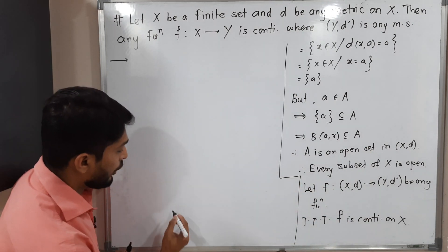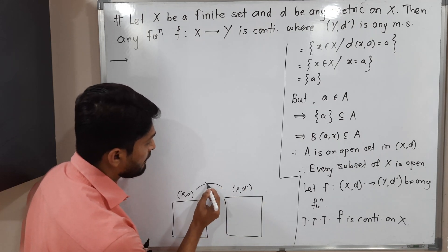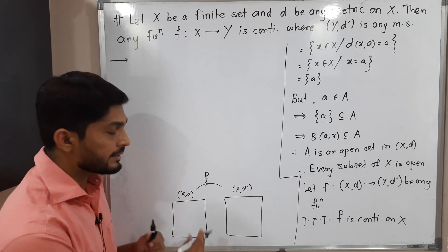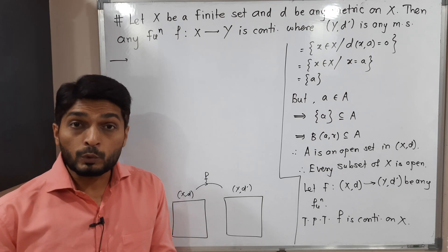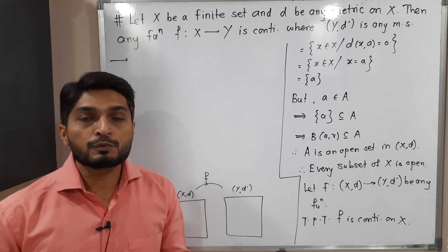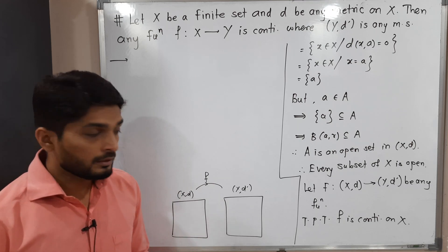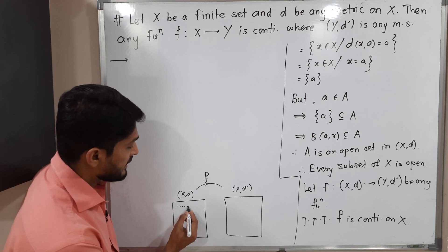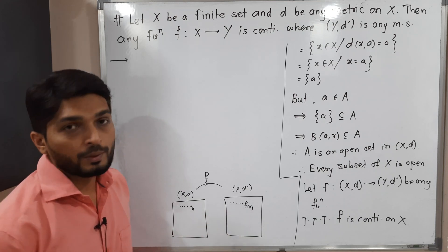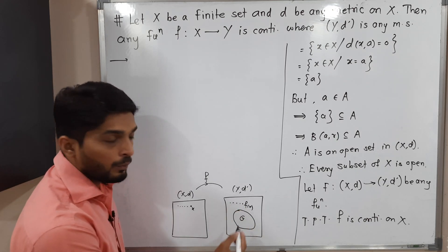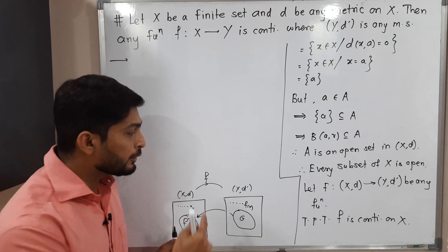We can prove the function F is continuous at each and every point of X. We could use the epsilon-delta definition, but in previous videos we have already seen many equivalent definitions of a continuous function. One result: if any sequence xn converges to x, then F(xn) converges to F(x). There is one more way: for any open set G in Y, its inverse image F⁻¹(G) is open in X. We are going to use this result to prove continuity.